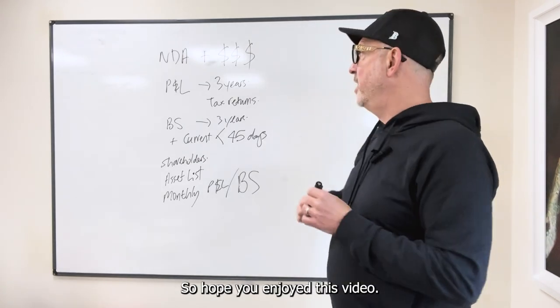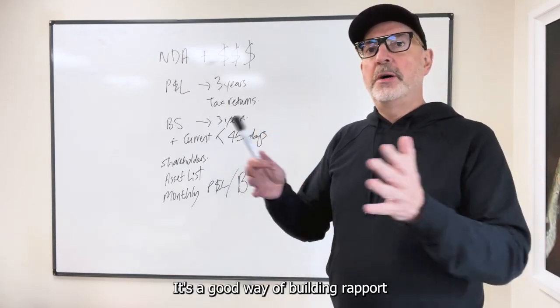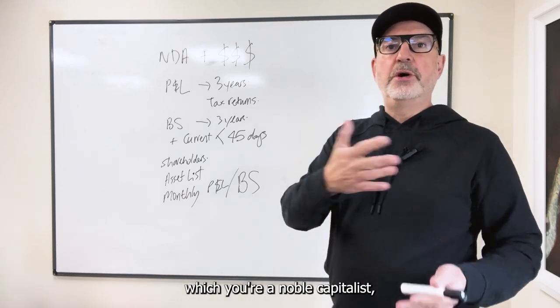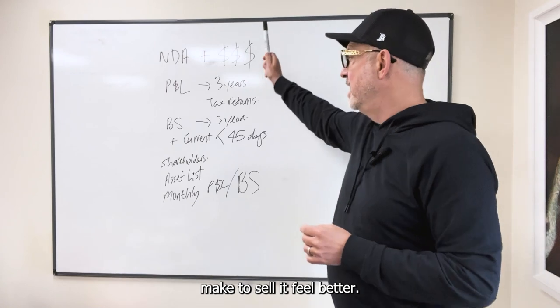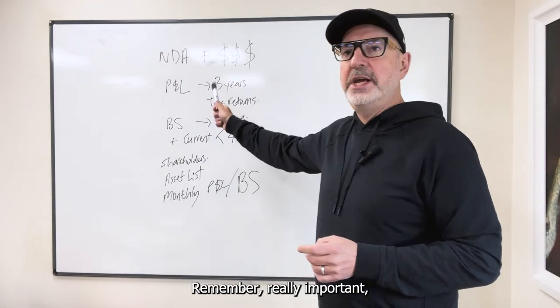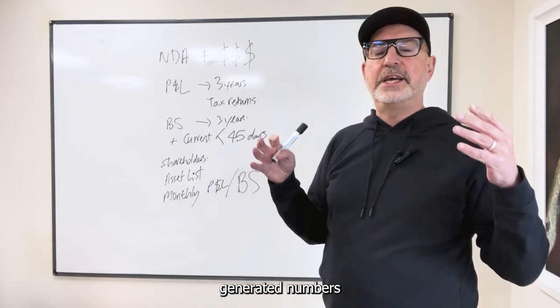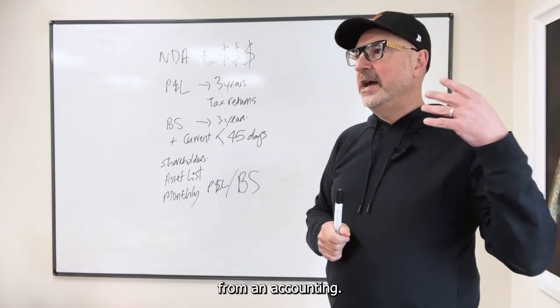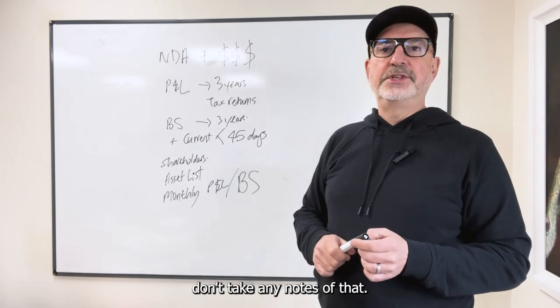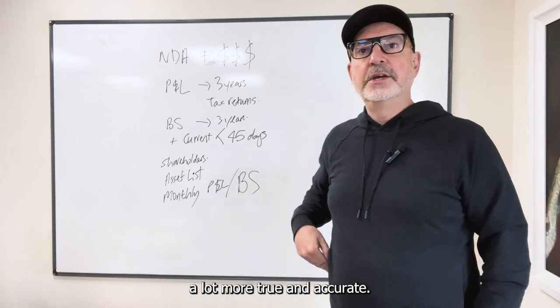So I hope you enjoyed this video. So just to recap, sign an NDA. It's a good way of building rapport. Protects the seller from you disclosing any of the information into the public market, which you're a noble capitalist, you're not going to do, but it makes the seller feel better. And then that's the list of information that you need to get from the seller. And remember, really important, the financials that you get have to be internally generated numbers from an accounting platform. They give you an Excel spreadsheet or they give you a hand journal, don't take any notice of that. You want them coming out of an accounting platform because they're going to be a lot more true and accurate. So I hope you found that useful.